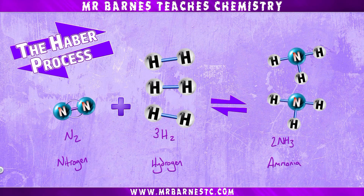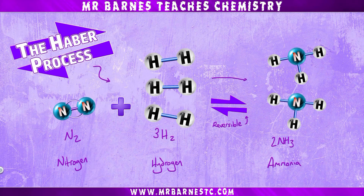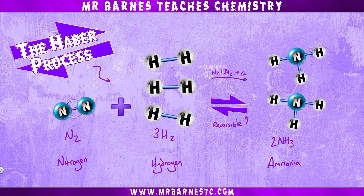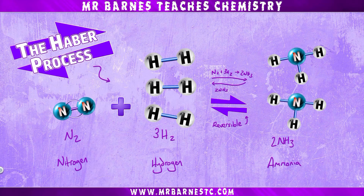What is unique about the Haber process is that it's a reversible reaction. The forward reaction is occurring where nitrogen and hydrogen are reacting to form ammonia, but the backwards reaction is also occurring at the same time, so ammonia is breaking down into nitrogen and hydrogen.